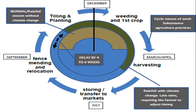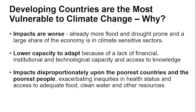Climate change is here already — it is affecting farmers big time. Why are we worse off as Africa? Because the impacts are worse, because we have a low capacity to adapt, and because the impacts are disproportionately felt among the poorest countries and poorest people. Even in your own city, poorer people have greater vulnerability to climate change. When there's no water, the richer people will go and buy water, but where do the poor people go? Where do their animals go?